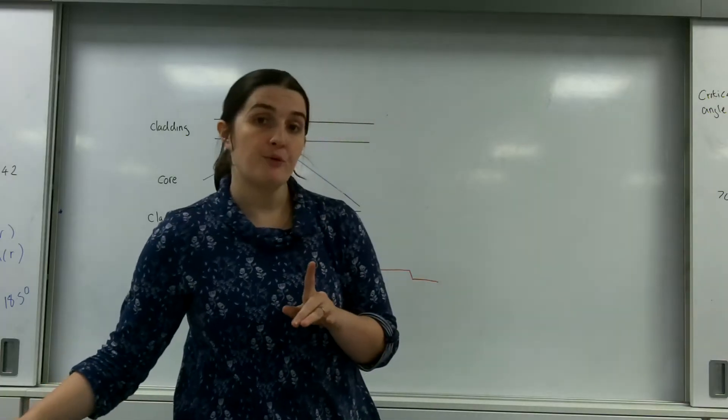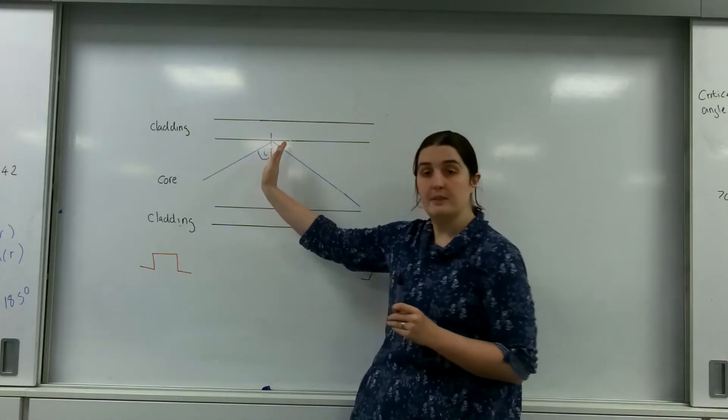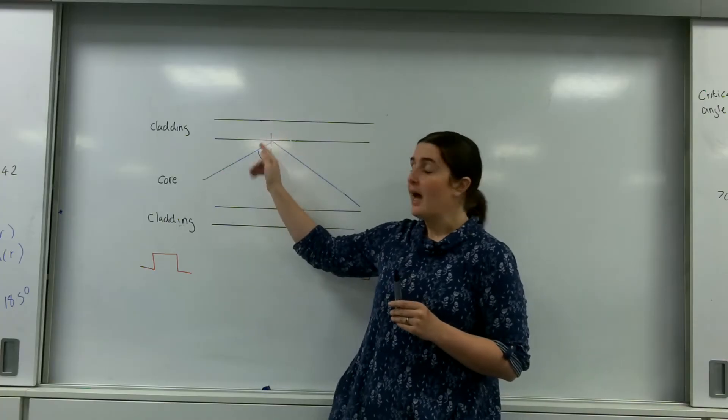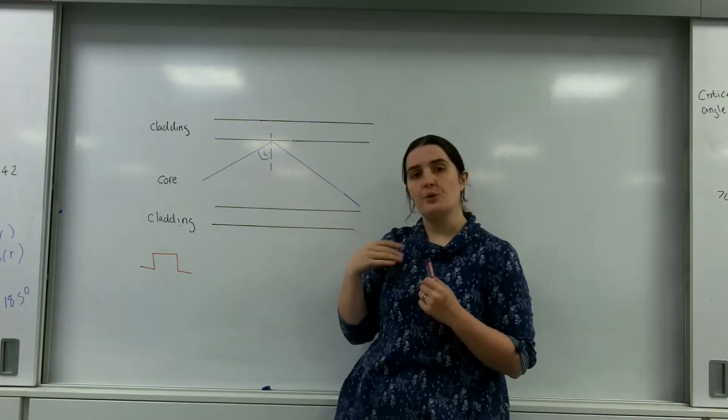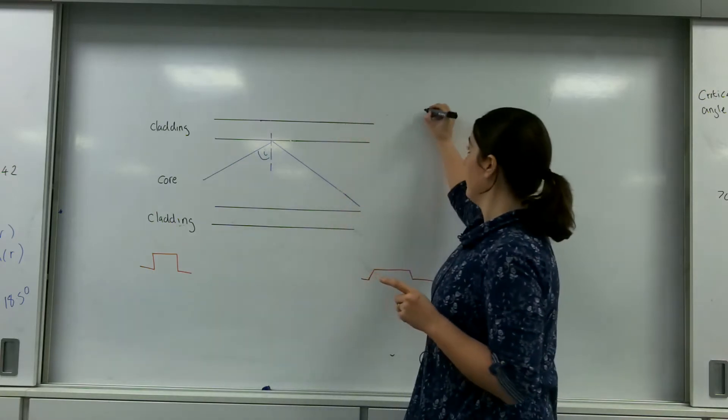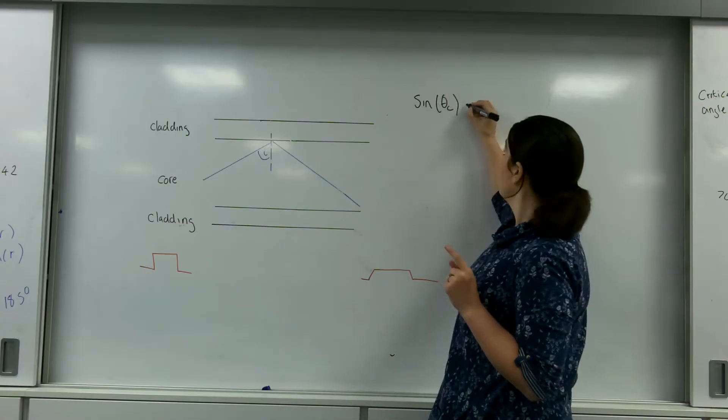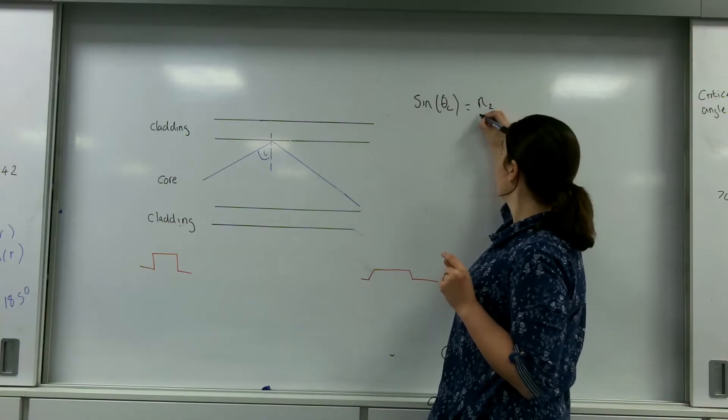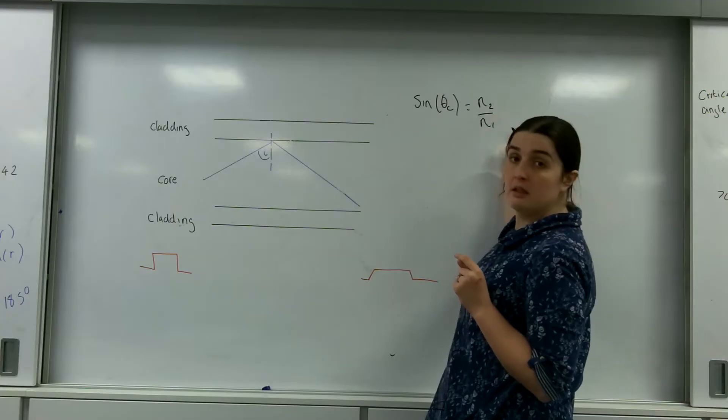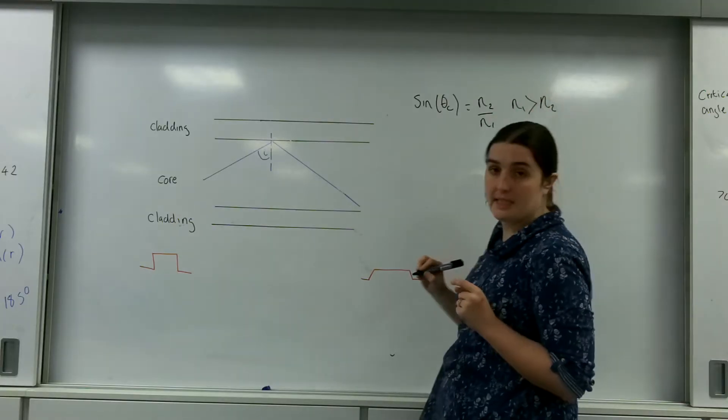So total internal reflection, just to remind you, is if you hit a substance or a surface and the angle of incidence you hit it at is bigger than the critical angle. And just to remind you how to calculate that, sine of the critical angle is n2 over n1, and n1 must be greater than n2 for this to happen.